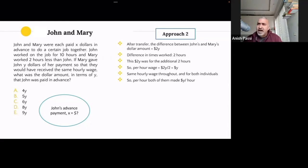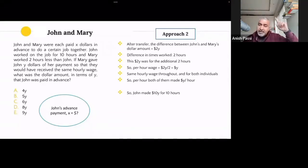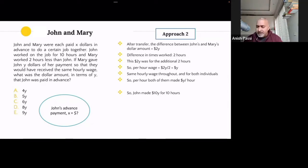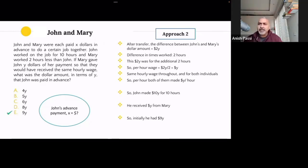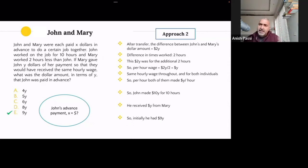Their hourly wages are Y dollars per hour each. John worked for 10 hours, so John overall made 10Y dollars total. My objective is how much money did John have initially in terms of Y. Eventually John had 10Y dollars — that's after the transfer. Before the transfer, he had received Y from Mary, so I subtract Y from 10Y. That leaves 9Y. So before the transfer, John initially had 9Y. That's the second approach — and I didn't actually need to write much down.